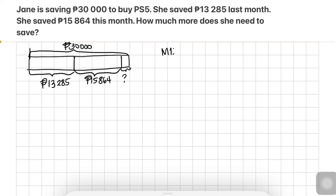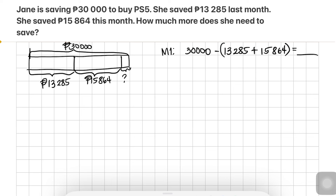Method 1: get the total savings first and then subtract it from 30,000 pesos. That would be 30,000 minus the sum of 13,285 pesos and 15,864 pesos.